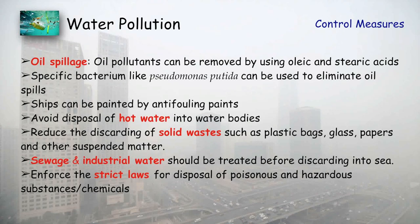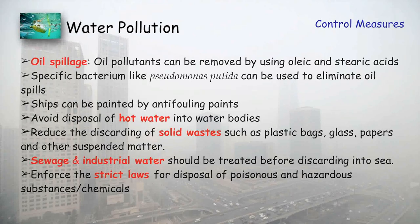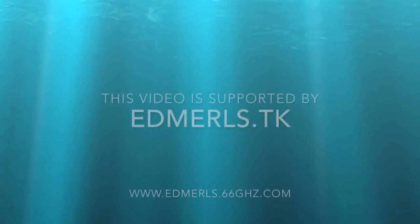Additional measures include treating oil spills using oleic or stearic acid, and specific bacteria like Pseudomonas putida to eliminate oil spills. Ships can be painted with anti-fouling paints. Avoid disposing of hot water directly; cool it to room temperature first. Reduce discharge of solid waste like plastic bags, glass, and paper. Sewage and industrial water should be treated before discarding into the sea. Enforce strict laws for disposal of poisonous and hazardous substances. That was all about water pollution.